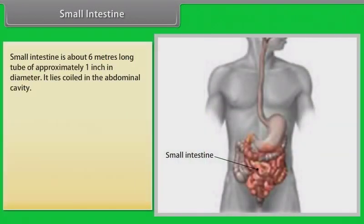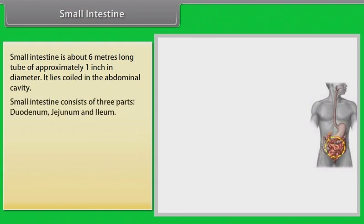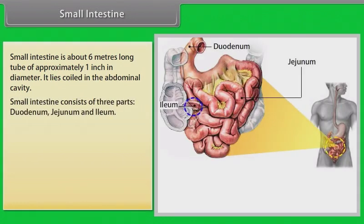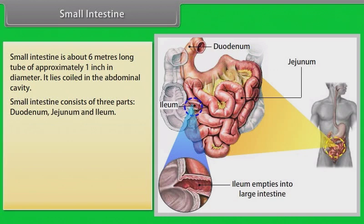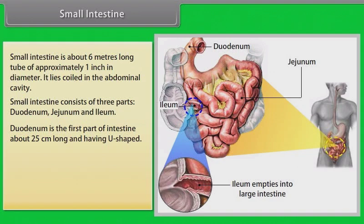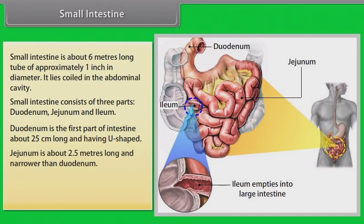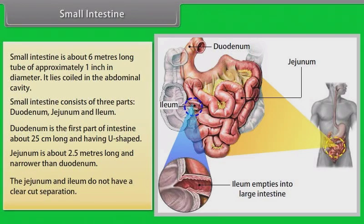The small intestine is about 6 meters long and approximately 1 inch in diameter, lying coiled in the abdominal cavity. It consists of three parts: the duodenum, jejunum, and ileum. The duodenum is the first part, about 25 centimeters long and U-shaped. The jejunum is about 2.5 meters long and narrower than the duodenum. The jejunum and ileum do not have a clear-cut separation.